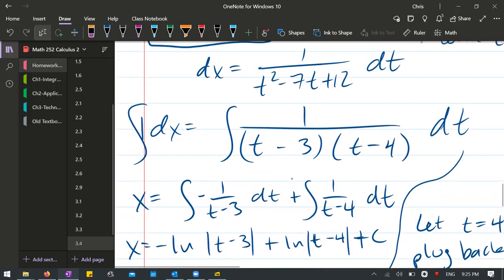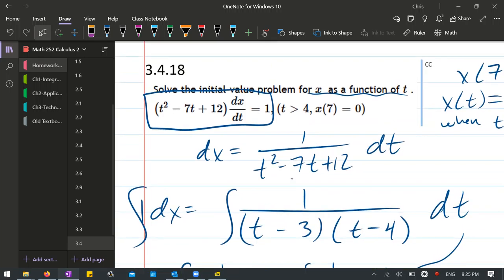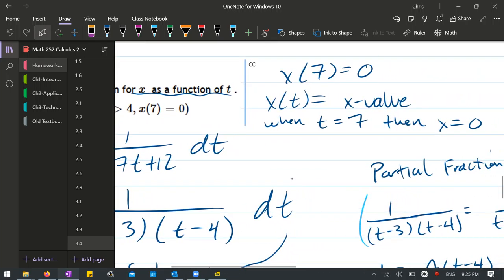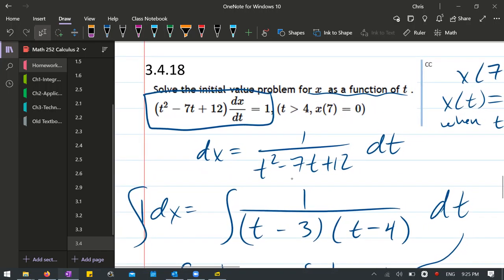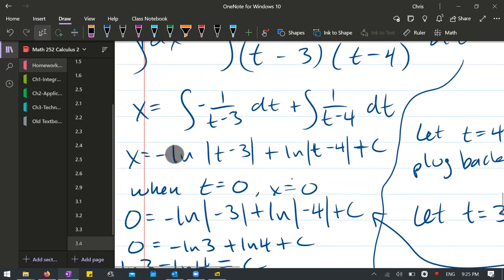So this is our answer, except we're sitting here with a constant that we need to figure out. The way we're going to find that is use the x and the t value that we saw at the very beginning. So when t is seven, x is zero. We're going to plug in those values. When t is, oh no. Big mistake.